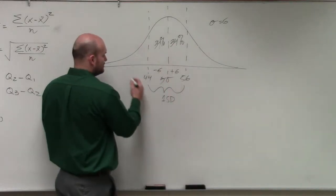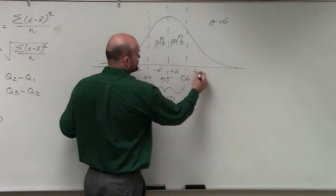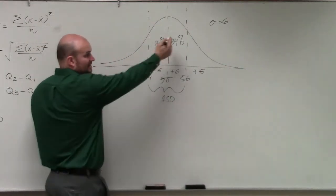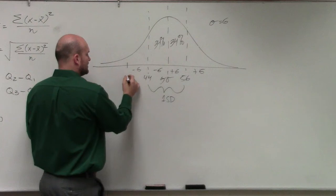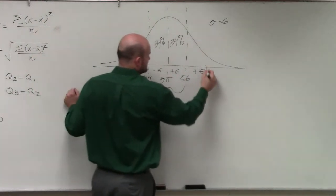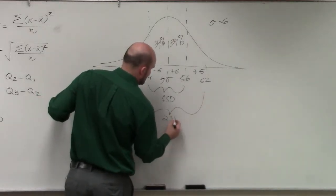If we continue this pattern to find our second standard deviation, we're going to continue to subtract 6 and add 6. So we're just going to keep on adding and subtracting the standard deviation. And what we'll get is 38 and 62. That is our second standard deviation.